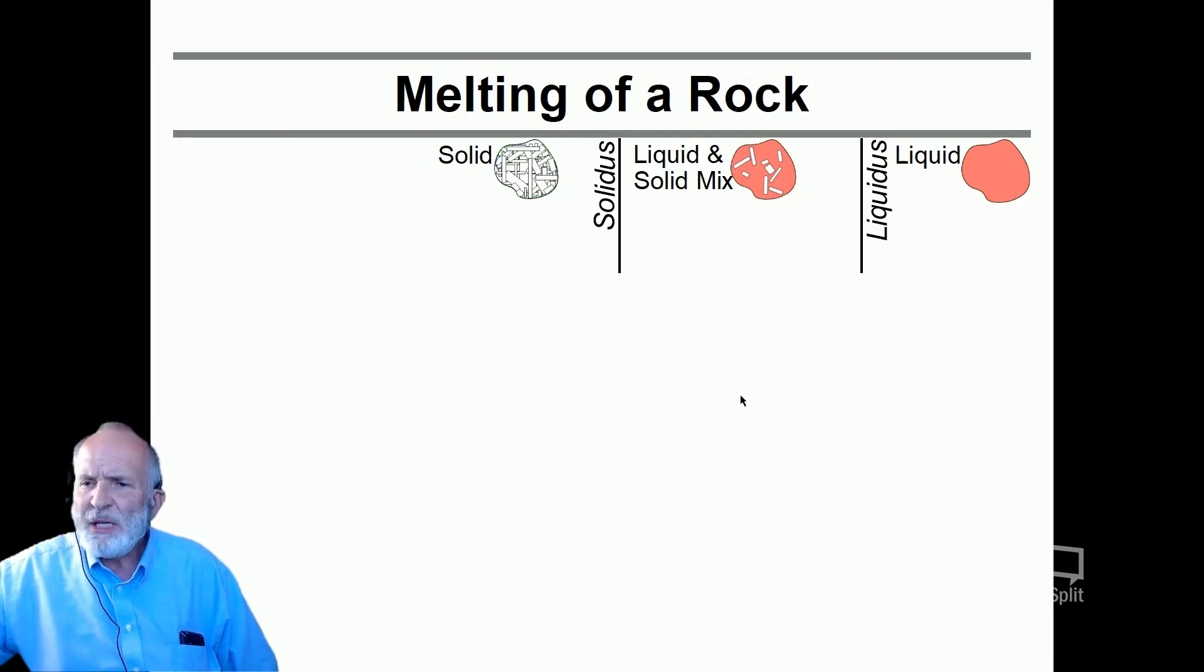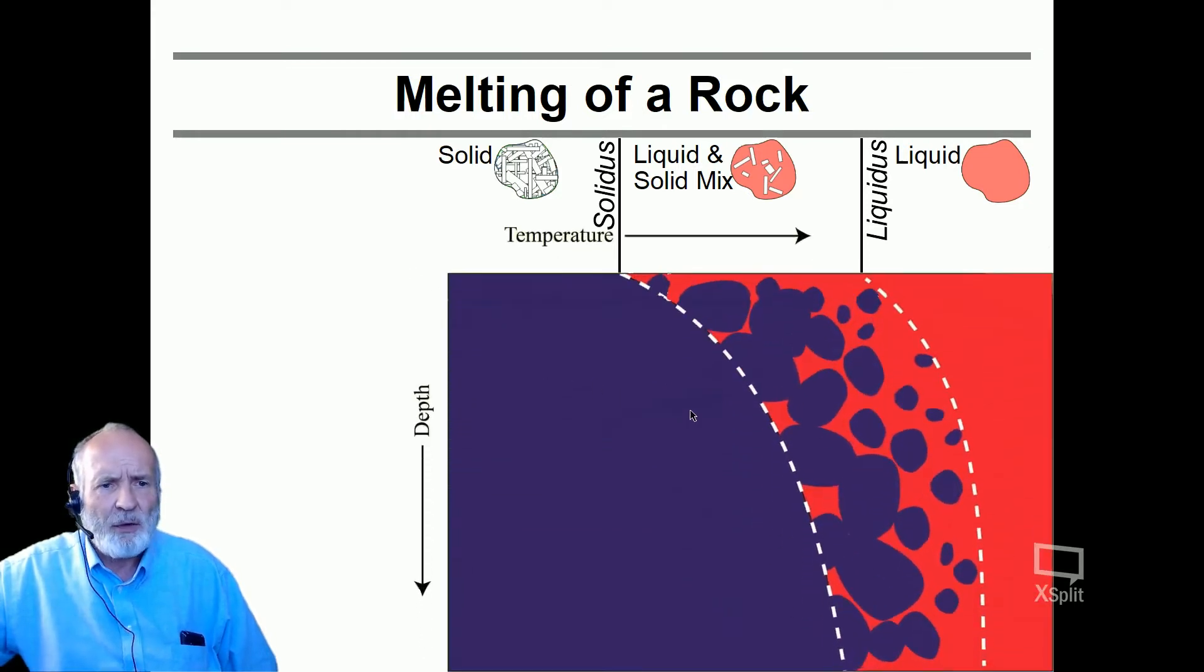So what does it mean for a diagram that has temperature and also depth or pressure included in it? We'll basically create something like this. Temperature increases from left to right. Depth goes down. And we can see the purplish here is all solid. The red here is all liquid. But in this transition zone, as we cool things down, as we make things colder, we are creating more and more crystalline solids that then all come together.